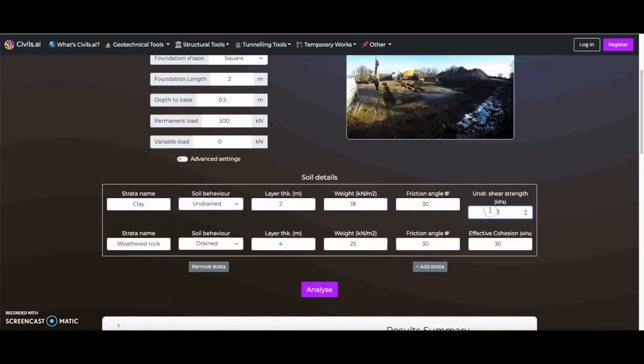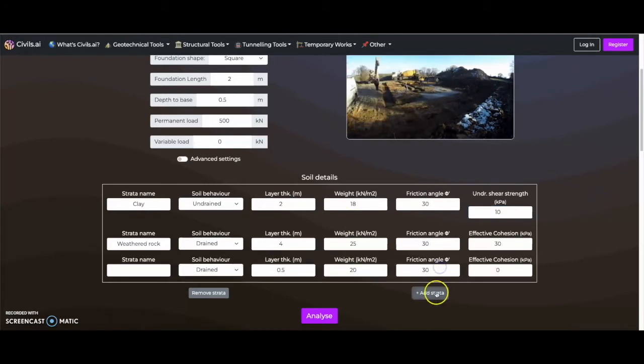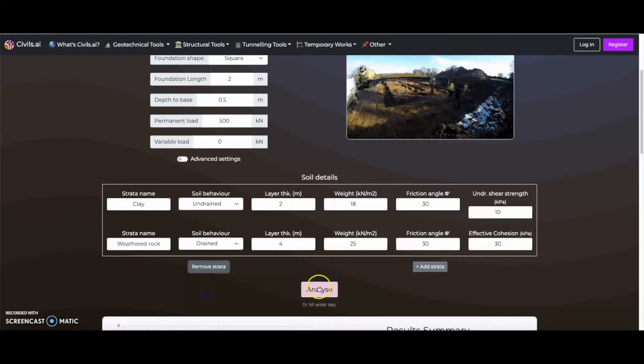Soil layers can be added or removed with the buttons at the bottom. After you've input your parameters, you can hit Analyze, or the Enter key, to generate results.